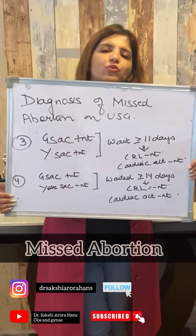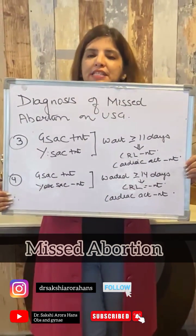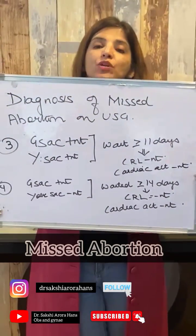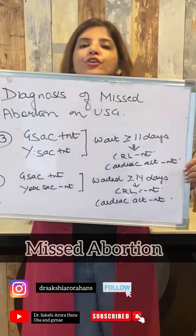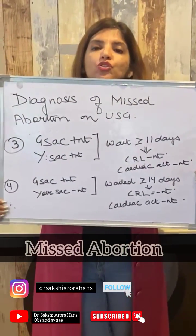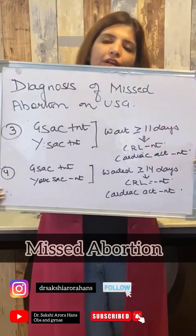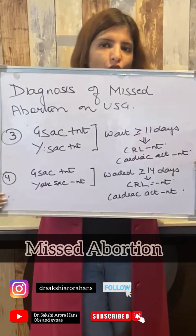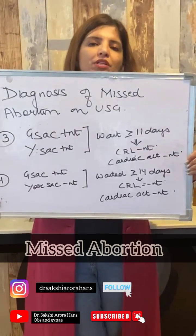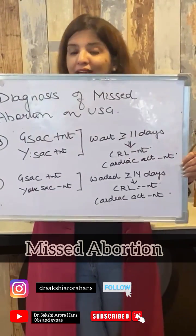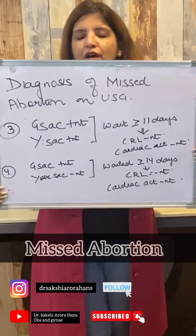A third way of diagnosing missed abortion is: if you can see a gestational sac and a yolk sac on ultrasound, you have waited for more than or equal to 11 days, and still the crown-rump length cannot be measured — that is, fetal poles cannot be seen or cardiac activity cannot be seen — that indicates missed abortion.